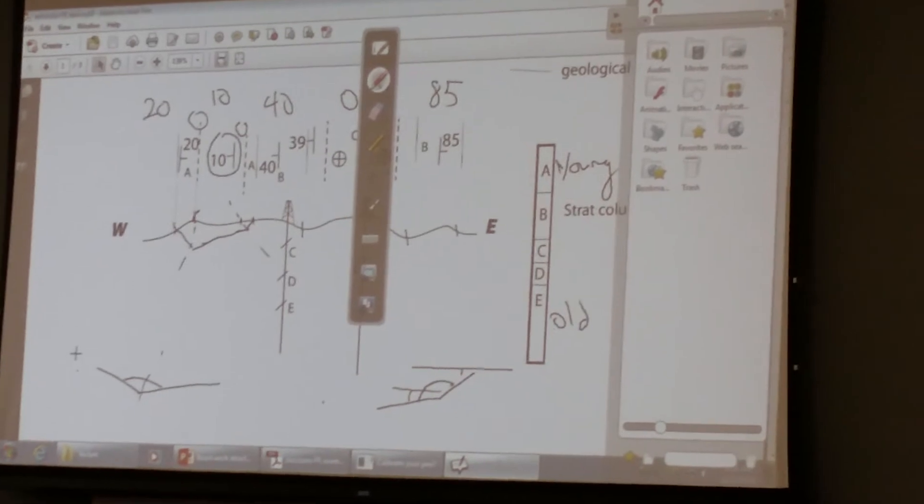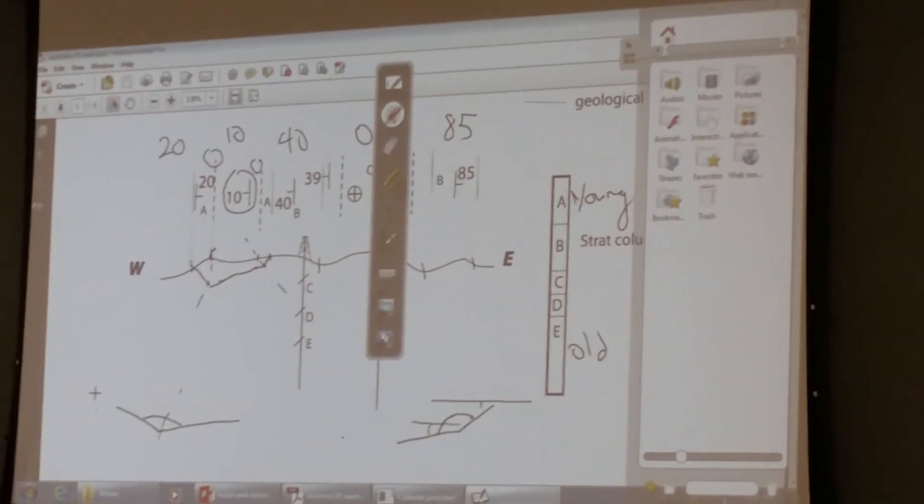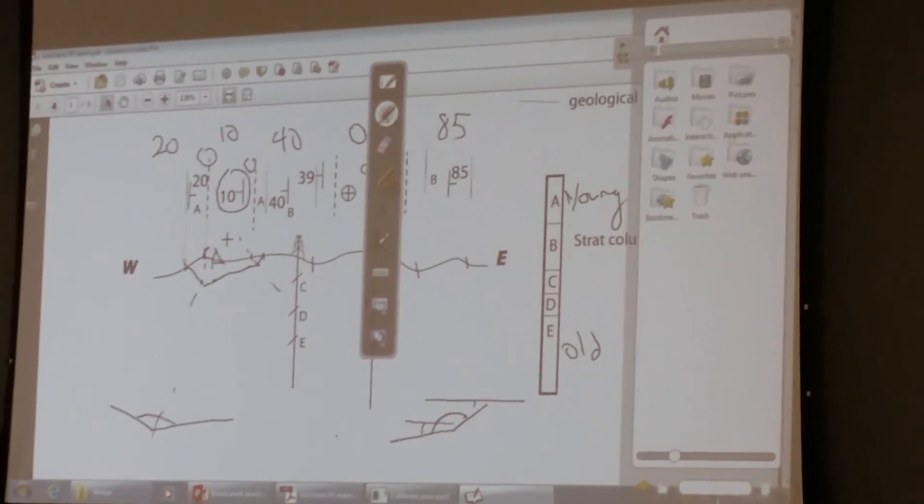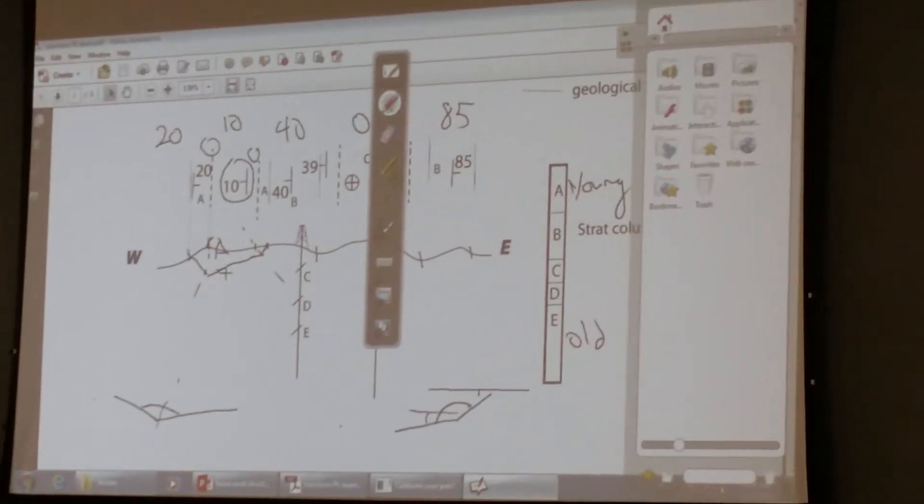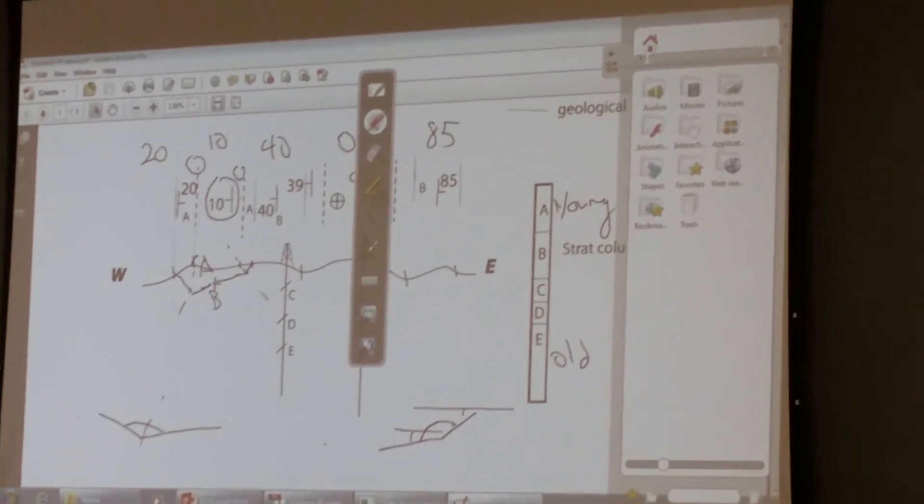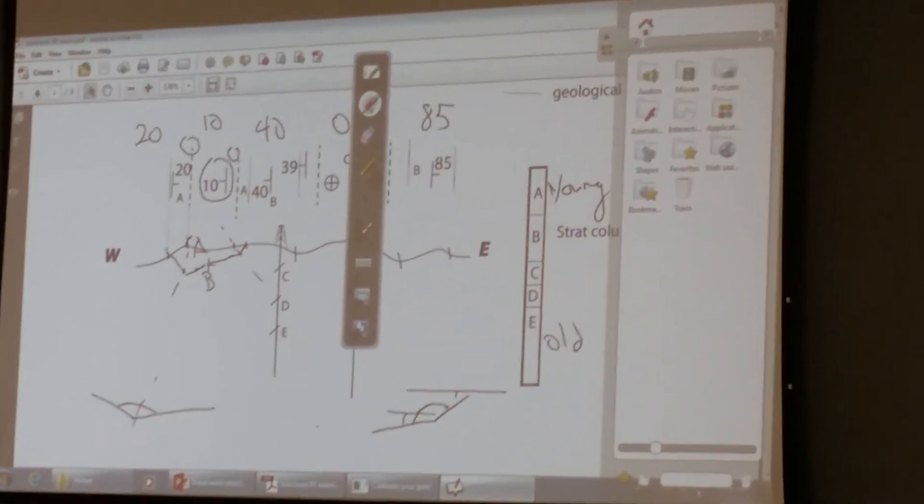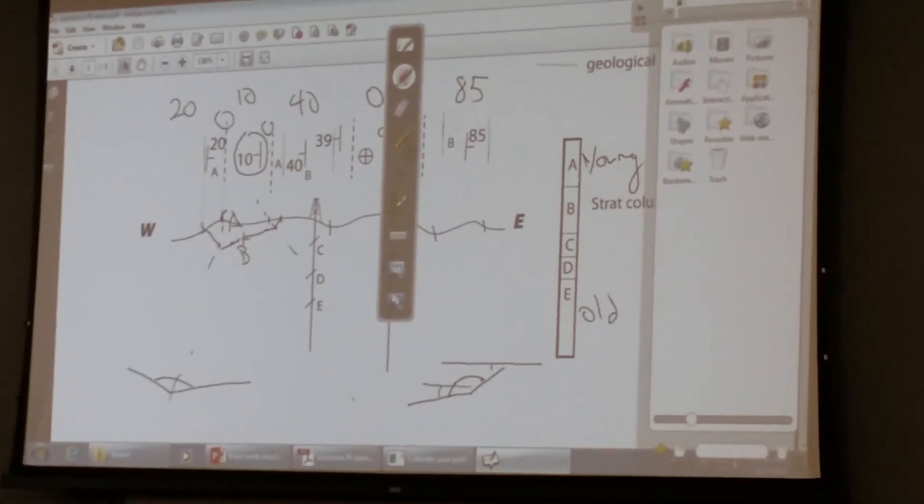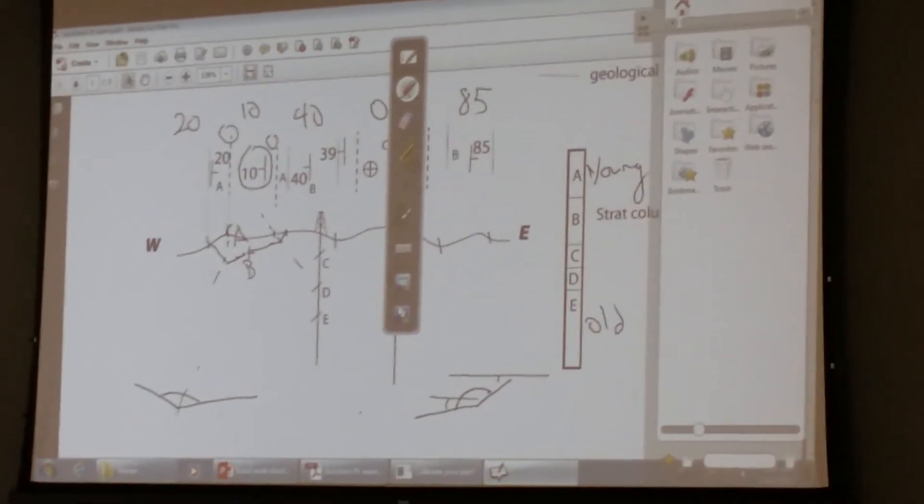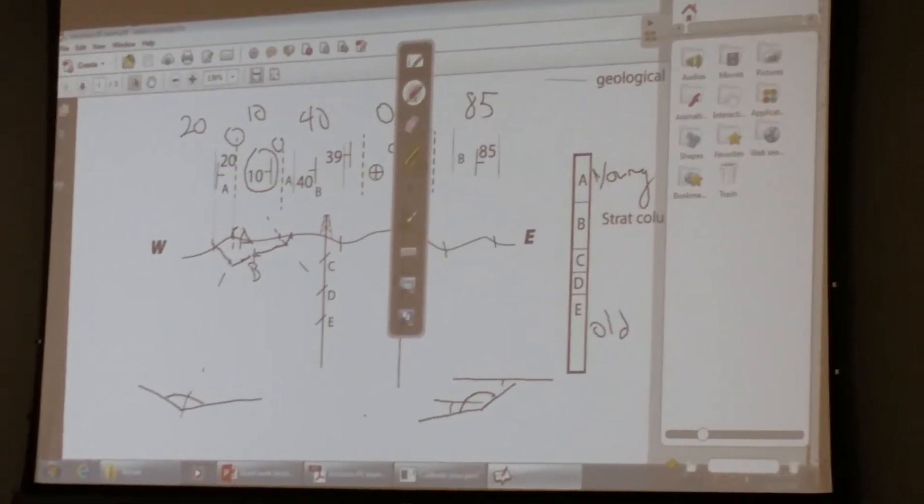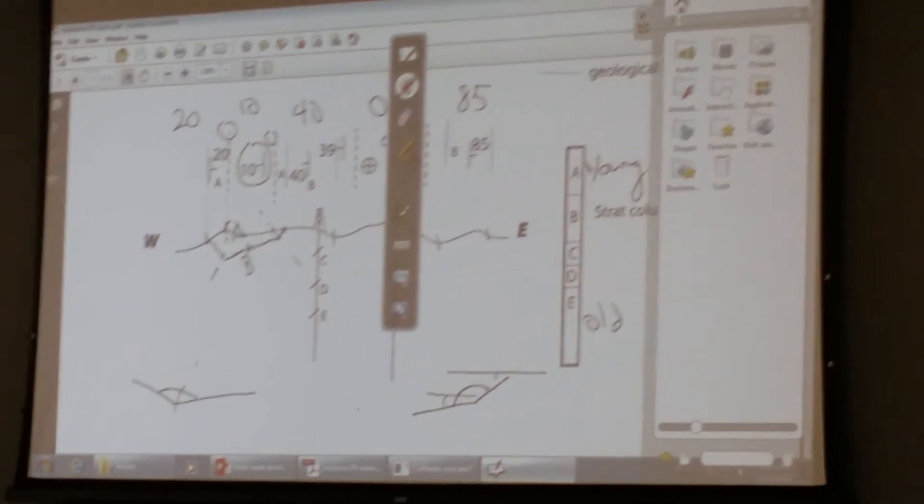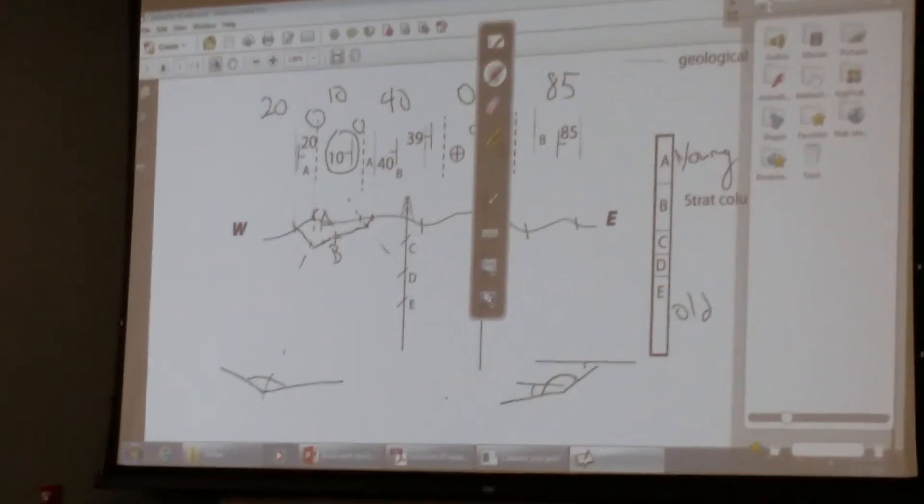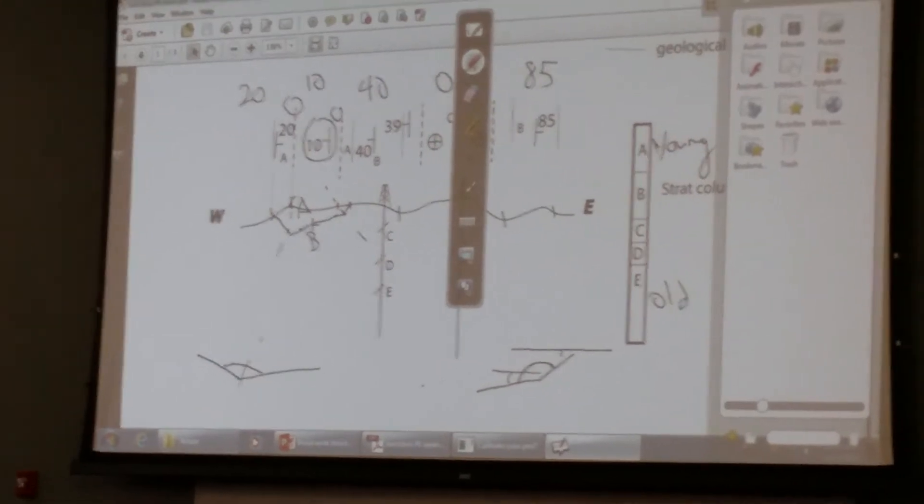And then in the middle, what rock unit do I have at the surface there? A. So this is all A, and then what's underneath A? B. So if I have A in the middle and it's a fold, what kind of fold is that? It's a syncline. And how do we know it's a syncline? So the youngest is in the core of the fold. So the shape is not enough - if it's a shape and we don't have age information, then it's called synform. We have age information, then it's a syncline.